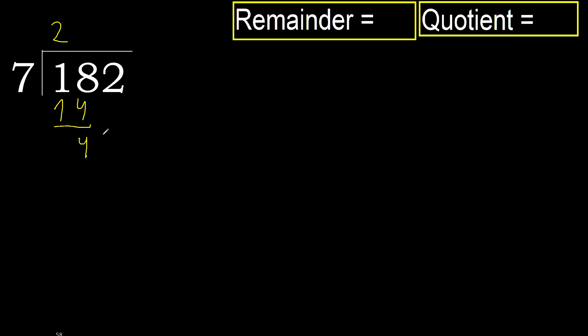Next: 42. 7 multiplied by 6 is 42. 42 is not greater. 42 minus 42 is 0.